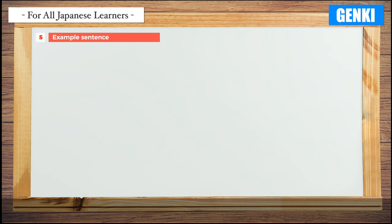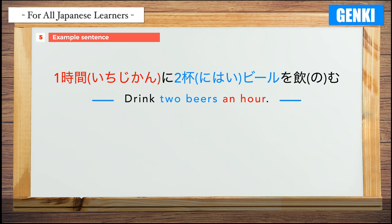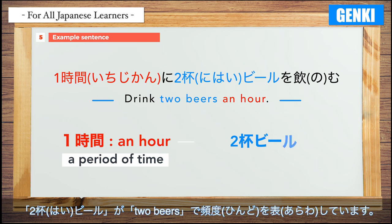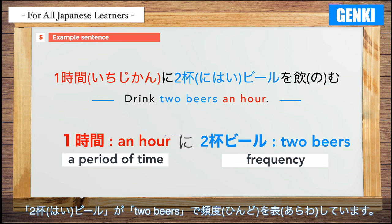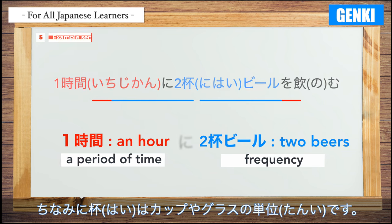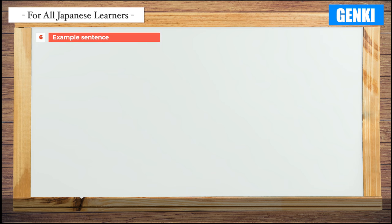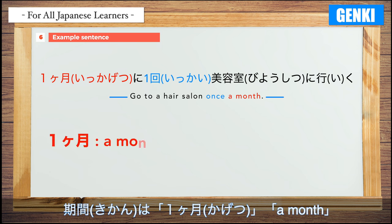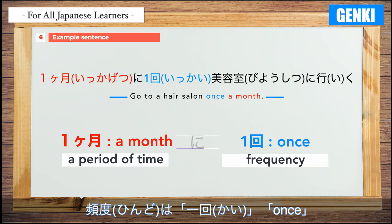Example 5: 1時間に2杯ビールを飲む — Drink 2 beers an hour. 1時間 (an hour) expresses the period of time, and 2杯ビール (2 beers) indicates frequency. By the way, はい (杯) is a unit of measure for cups and glasses. Example 6: 1ヶ月に1回美容室に行く — Go to a hair salon once a month. The period is 1ヶ月 (a month) and the frequency is 1回 (once).